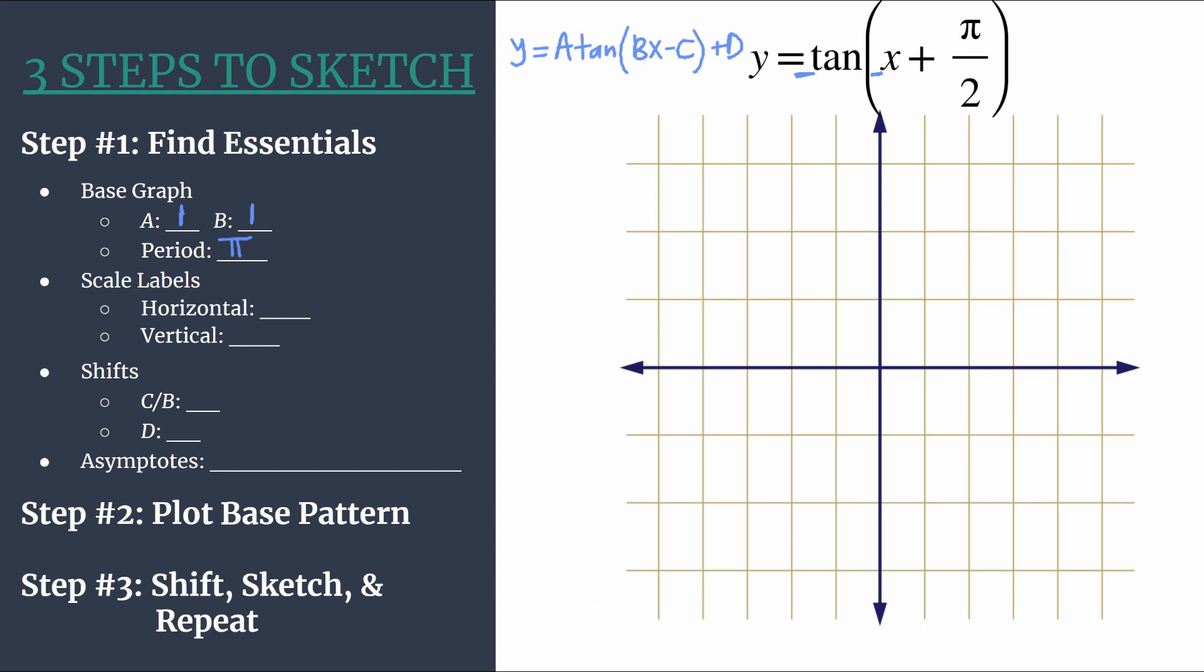So now we can set some scale labels. This will be how we count to label our tick marks on our axes. The horizontal labels are particularly important to help us get a nice, clean and equally distributed graph. So to do that, all we have to do is take our period and divide by four. So we have our period pi, we divide it by four, we should label our horizontal tick marks by pi over four. And for our vertical axis, it usually works well to count by ones. So let's go ahead and label our axes while we're here.